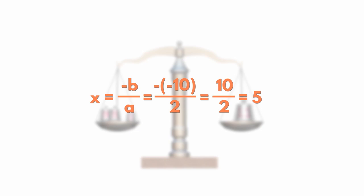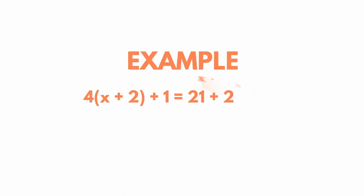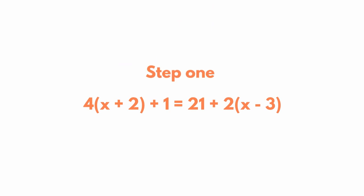However, many times the right and left hand side of an equation may be a bit more complex, like in the following example. In order to overcome this complexity, we need to work in four steps. Step one: apply the distributive property.